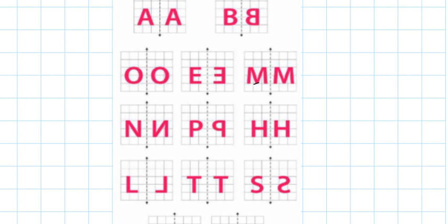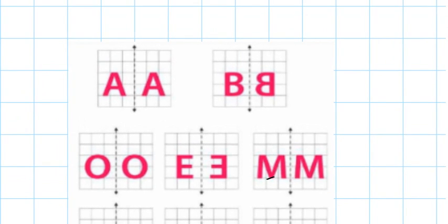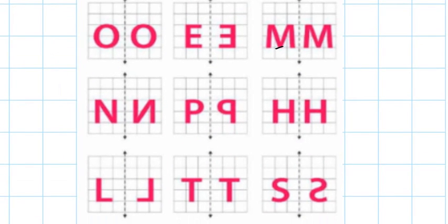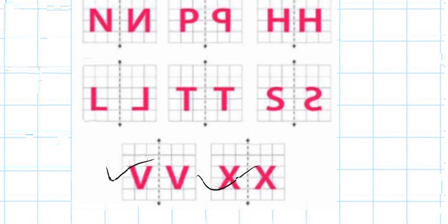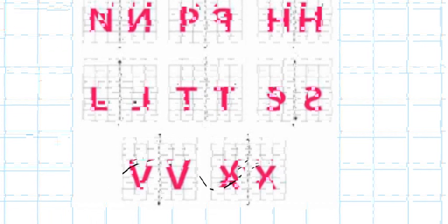we will see the reflection images. So A and B, the O, M, N, P, H, L, T, S, V, and X. You can see these are the letters with their reflection images.